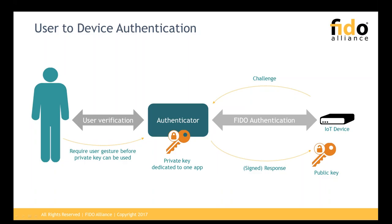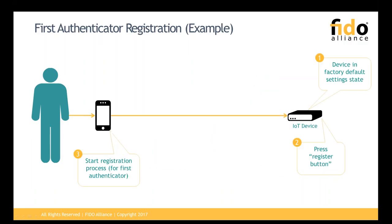The user verifies whether it's the right context and service. The authenticator verifies whether it's the right user. And the FIDO server, sitting in the device, verifies whether it's the right device and the right context. So we want: the right context, the right service, the right user, and the right device. If you can provide that assertion to the device, you can do a lot of transactions, including financial transactions. What we have to do is shrink down the FIDO server and remove everything only relevant to supporting millions of users in parallel, to make it really small and fit into a small device.